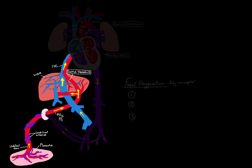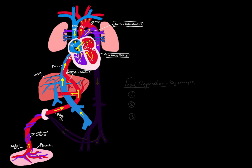Once past the IVC, we enter the heart where things get interesting. Blood entering the right atrium comes from two places: the nicely oxygenated IVC blood, and deoxygenated blood from the head, neck, and upper extremities through the superior vena cava. The oxygen saturation of the deoxygenated SVC blood is around 40%, whereas the oxygenated blood from the IVC comes in at a saturation of around 70%. Our goal is to get that IVC blood across to the left side of the heart.